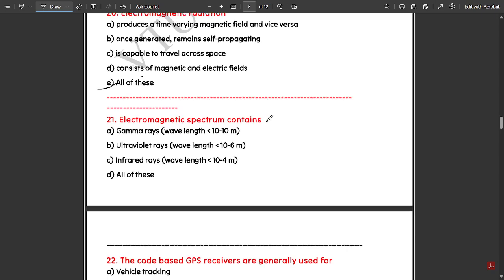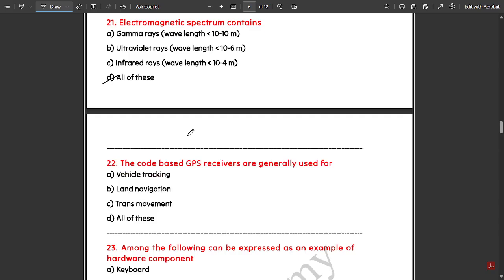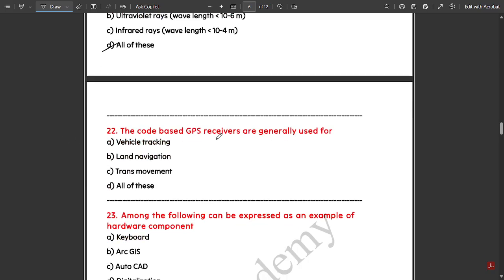Electromagnetic spectrum contains all of the above: gamma rays, UV rays, and infrared. Code-based GPS receivers are generally used for all of the above.